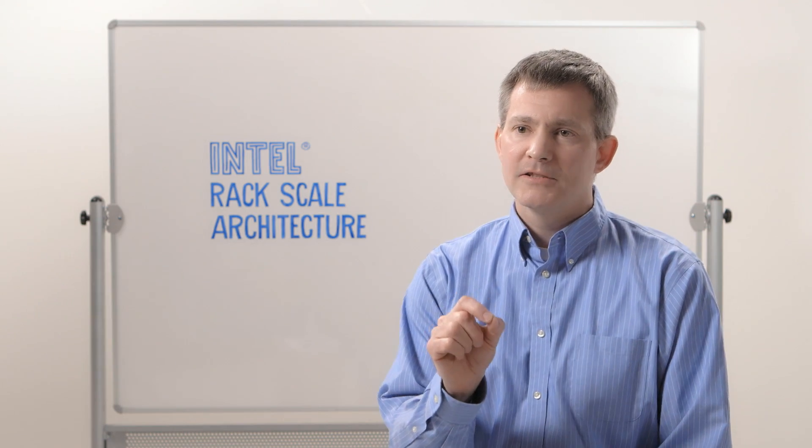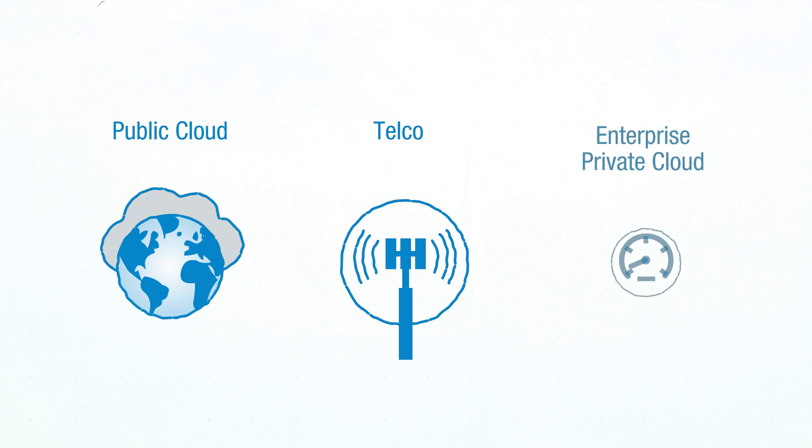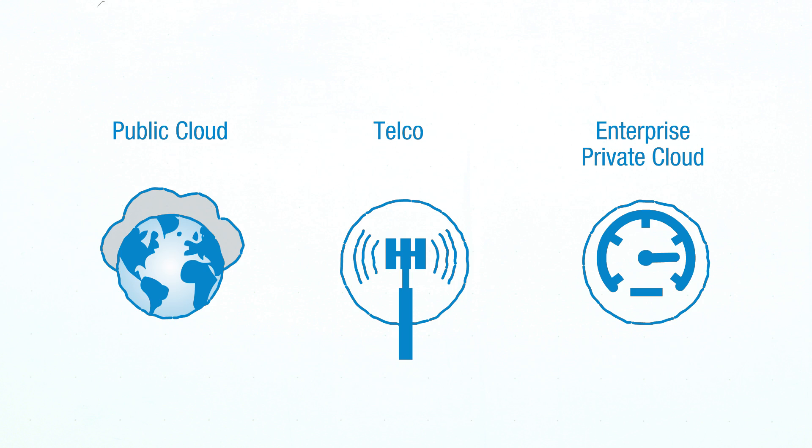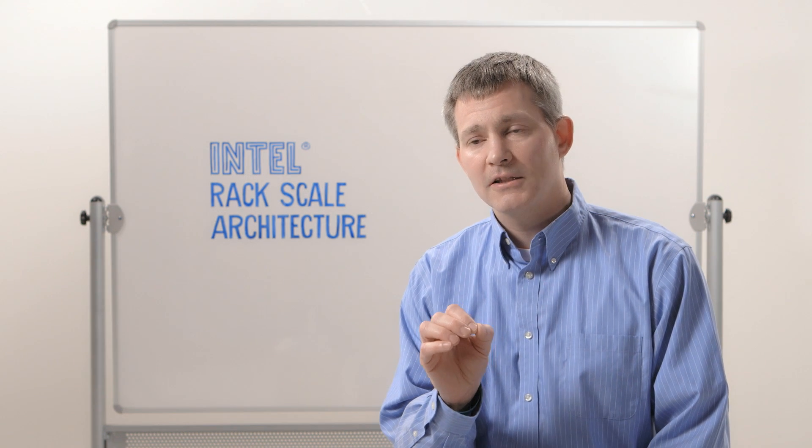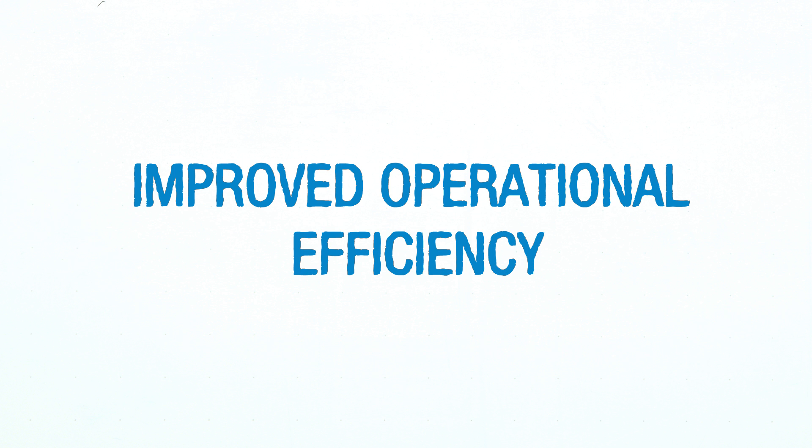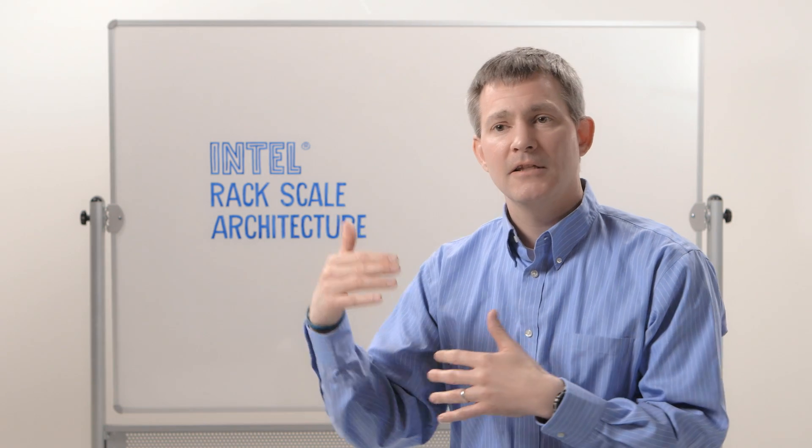We've already begun piloting RSA with public cloud service providers, telco service providers, and early enterprise private cloud adopters. By deploying Intel's Rackscale Architecture, end users are going to see tremendous benefit. They'll be able to accelerate their service delivery from weeks to a matter of minutes, they'll see improved operational efficiencies, and you'll have interoperability where the hardware and software comes together in a seamless way.